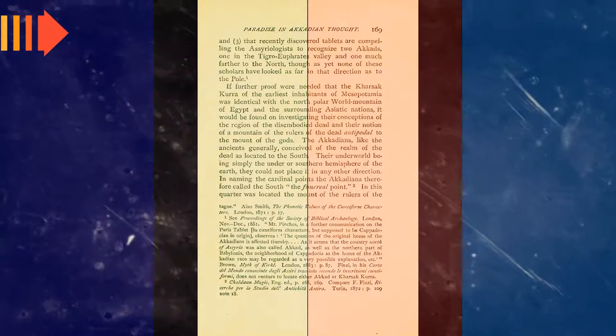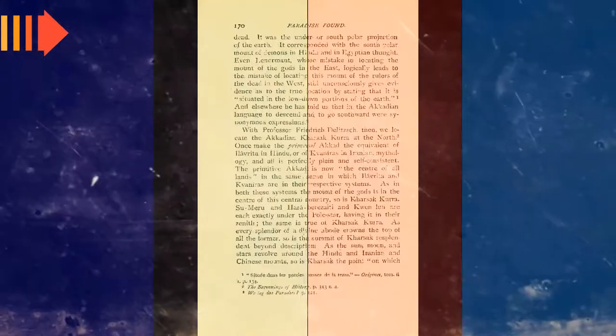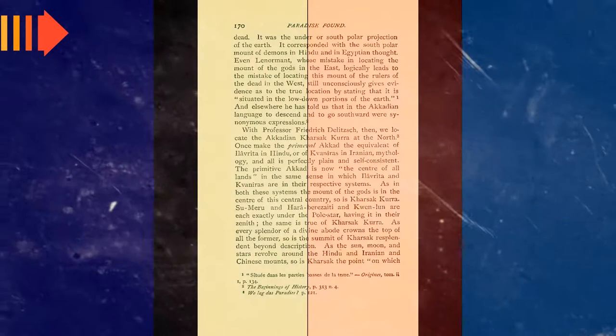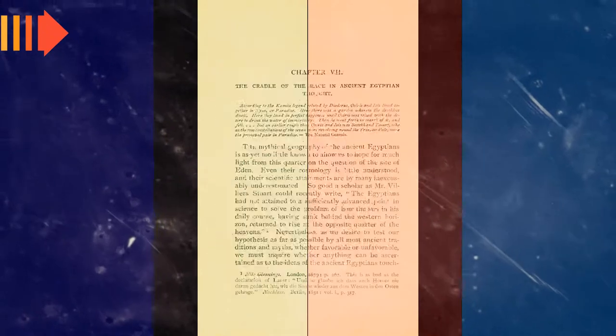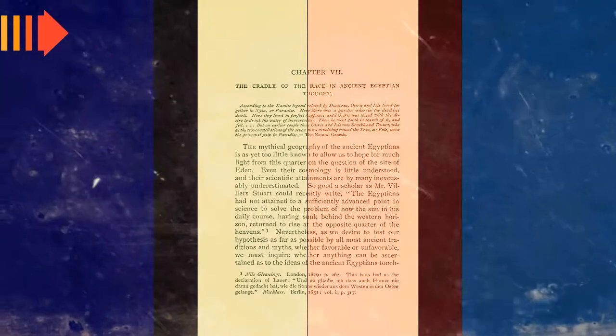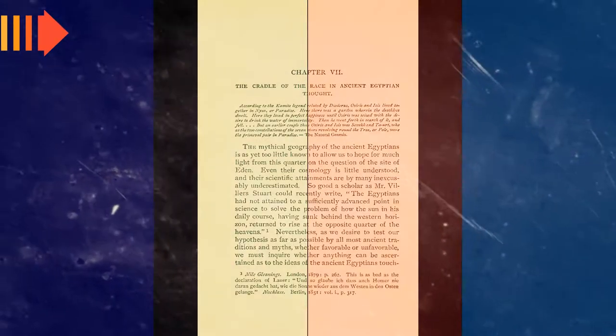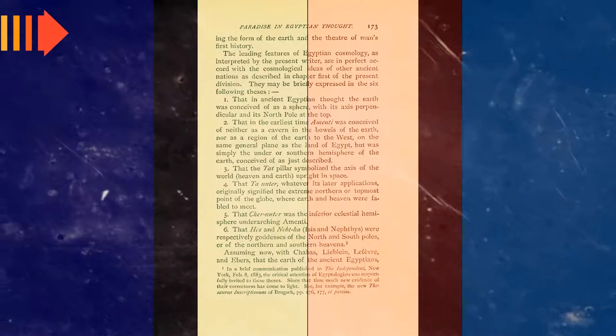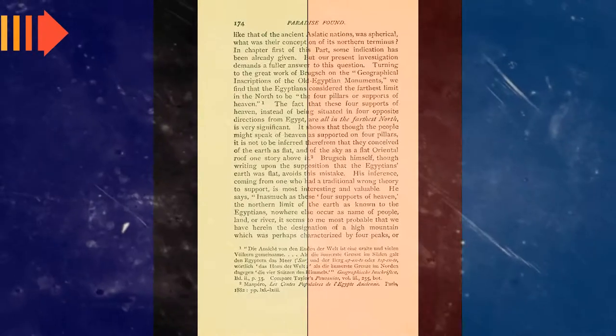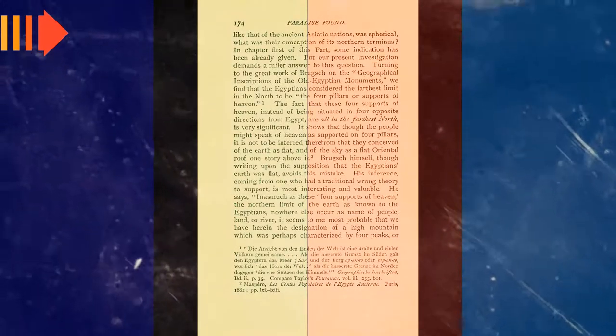His work, a commentary on Timaeus, is lost, but Proclus, a Neoplatonist of the 5th century AD, reports on it. The passage in question has been represented in the modern literature either as claiming that Crantor visited Egypt, had conversations with priests, and saw hieroglyphs confirming the story, or as claiming that he learned about them from other visitors to Egypt.